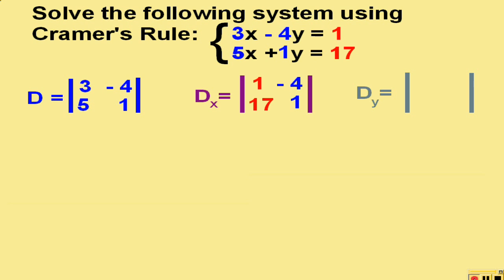To get the D sub y determinant, we use the same procedure. We take the coefficients of x and place them here, and instead of using the coefficients of y, we will again use the ending numbers in place of the coefficients for y.